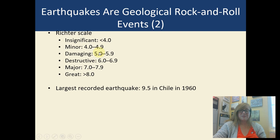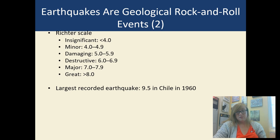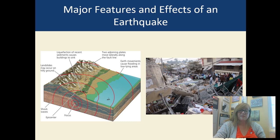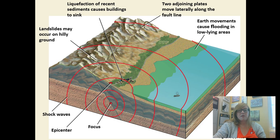Anything magnitude four or less is considered insignificant. What's interesting about the Richter scale is that as you go up one number, the magnitude increases by ten. So a magnitude five earthquake is ten times stronger than a four, and a six is a hundred times stronger than a four. You can see as you go up in the scale these can be devastating. The largest on record was a 9.5 in Chile in 1960 — devastatingly strong. Earthquakes and volcanoes can be extremely powerful and catastrophic. After an earthquake you can see terrible damage to buildings and civilizations, and they're not really something you can predict.